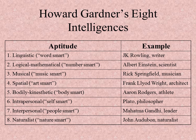Some examples: linguistic intelligence — J.K. Rowling; logical-mathematical — Albert Einstein; musical — Rick Springfield; spatial — Frank Lloyd Wright, the architect; body kinesthetic — Aaron Rodgers; intrapersonal — Plato, the philosopher; interpersonal — Mahatma Gandhi, or any great salesperson; and naturalistic — John Audubon.